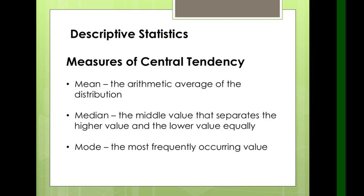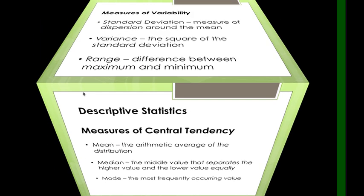Now let's start with descriptive statistics. We have the measure of central tendency — usually the most commonly used in solving or treating research data. We have the mean, which is the arithmetic average of the distribution, also called weighted mean. The median is the middle value that separates the higher and lower values equally. The mode is the most frequently occurring value. Usually in research, the weighted mean is used because researchers want to get the average of specific data and describe it.